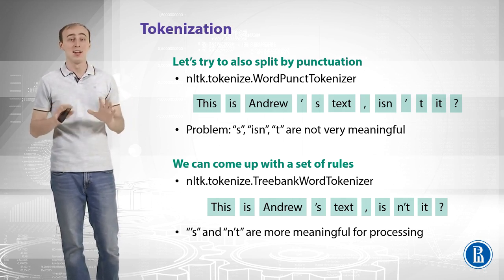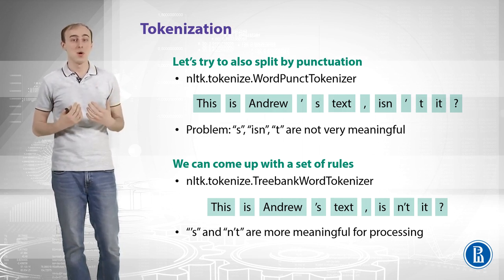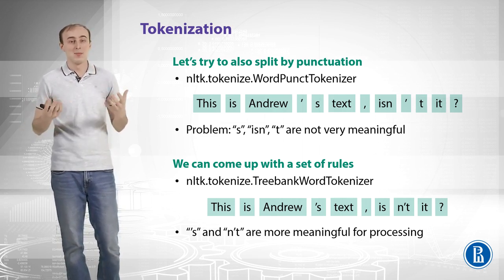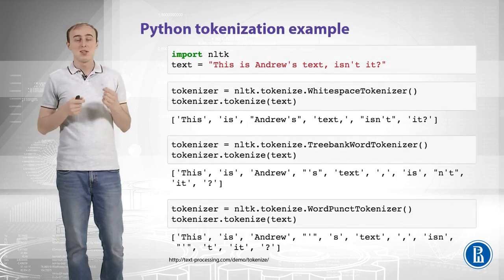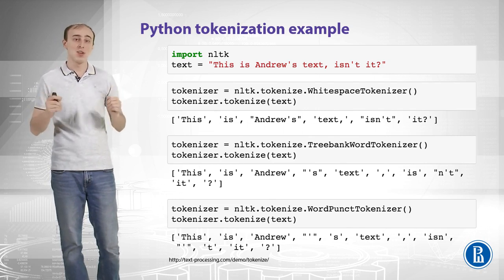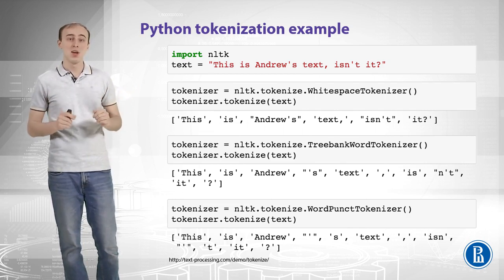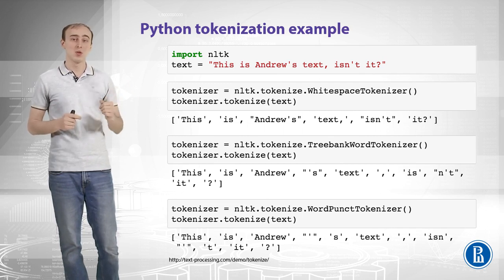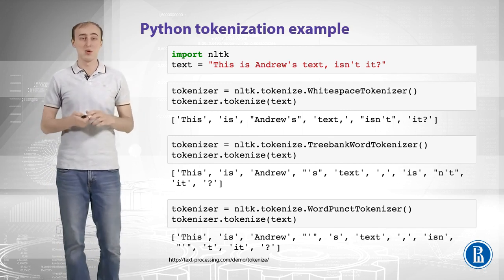With the Treebank tokenizer, 'Andrew' and 'text' are now different tokens, apostrophe-S is left untouched as a separate token, and 'n't' is kept together — because 'n't' means 'not', negating the previous token. This is very close to perfect tokenization for English. In Python you simply import NLTK, instantiate a tokenizer like WhitespaceTokenizer or TreebankWordTokenizer, call tokenize on your text, and get a list of tokens. It's pretty easy to do tokenization in Python.